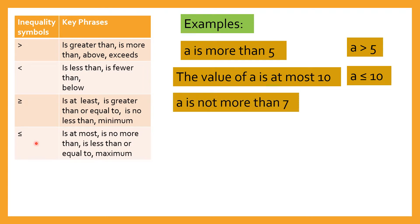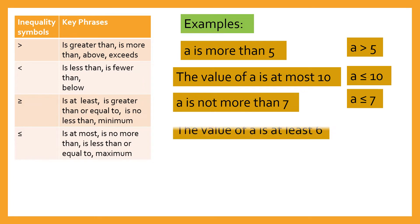'A is not more than 7' — not more than means a is less than or equal to 7. Next, 'the value of a is at least 6' — at least 6 means that's the minimum, so a is greater than or equal to 7.